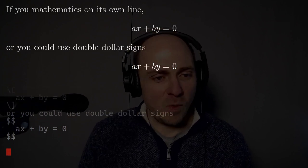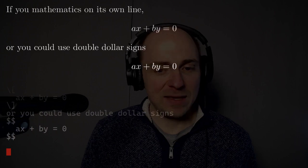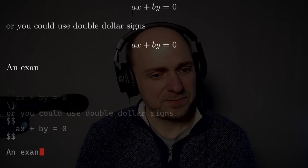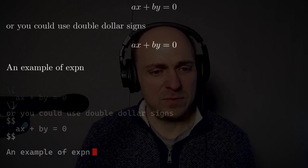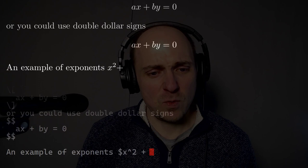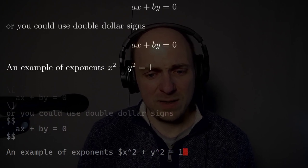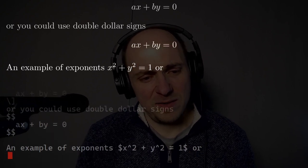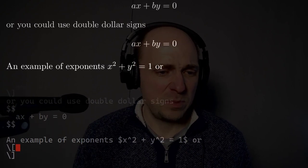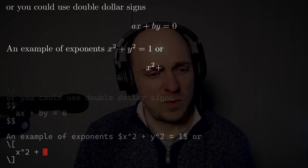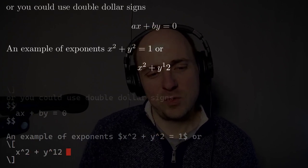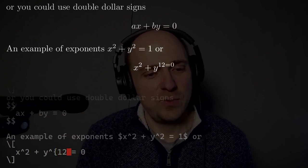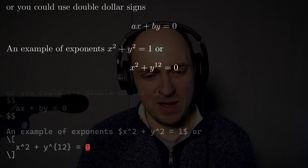Well, we can do a lot more nice-looking mathematical typesetting with this kind of system. We can write things like maybe an example of exponents. I can write things like x squared plus y squared equals one. I can maybe put that in a displayed environment. x squared plus y to the 12th and see what happens. So here you see I got y to the one too. So I need to put curly braces around that.